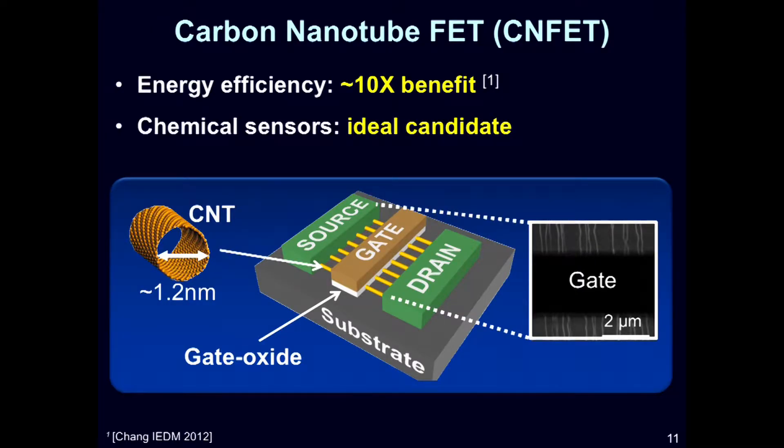The motivation for using carbon nanotubes for future sensing systems comes from two parts. On one hand, carbon nanotubes make excellent, ideal transistors. In fact, it's projected that if you could build a large-scale system using carbon nanotubes, that system would be over 10 times — over an order of magnitude — more energy efficient than the exact same system made from today's silicon transistors. Moreover, not only do carbon nanotubes make ideal transistors, but these transistors also make ideal sensors.